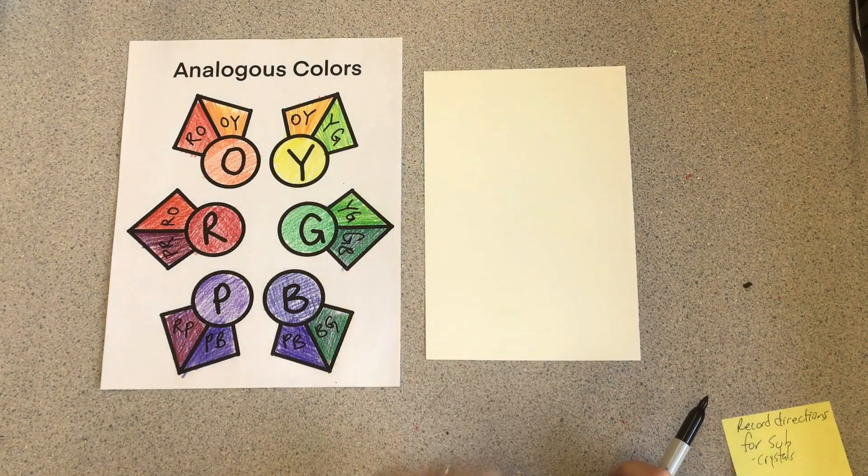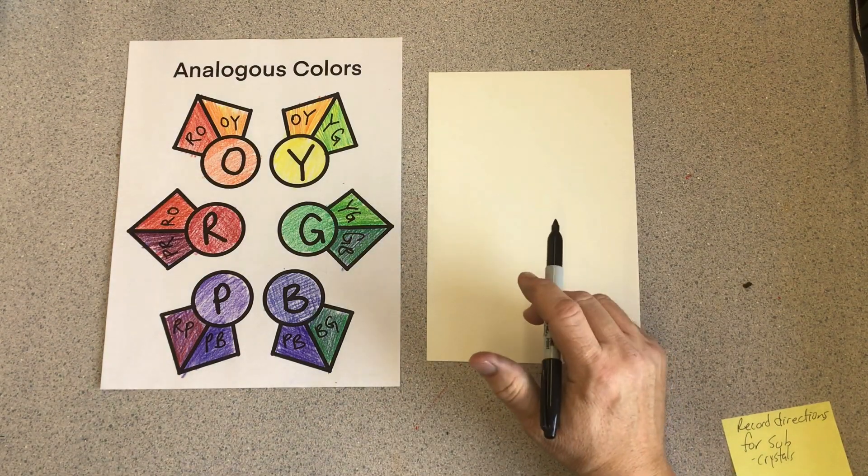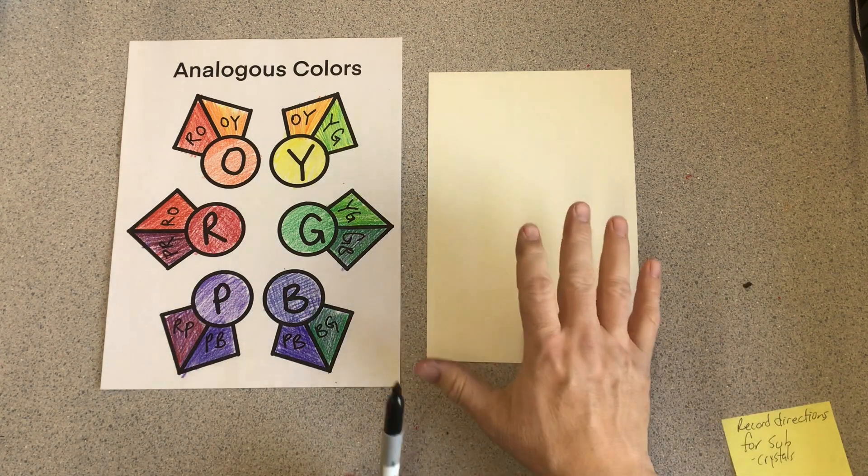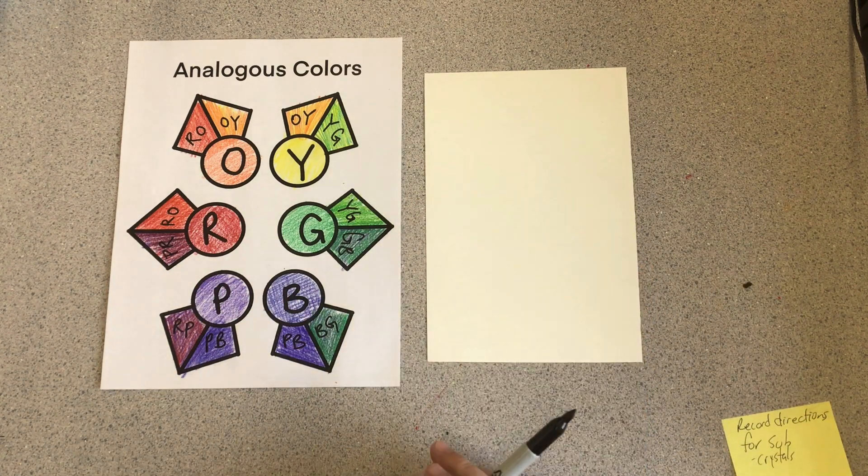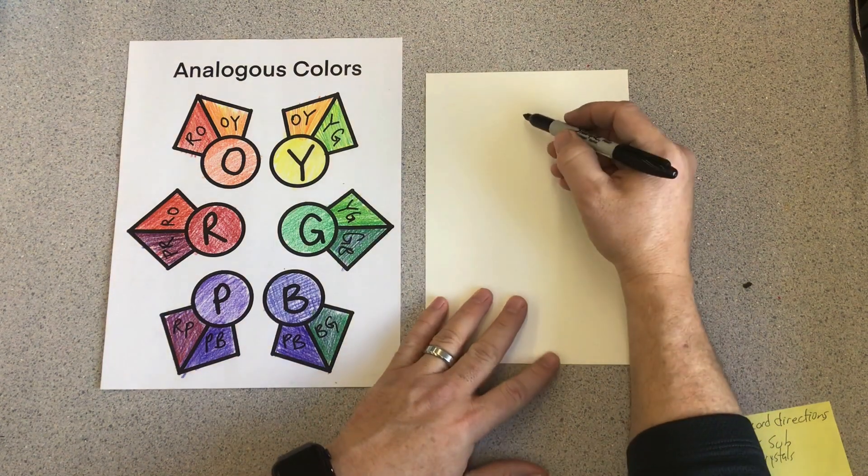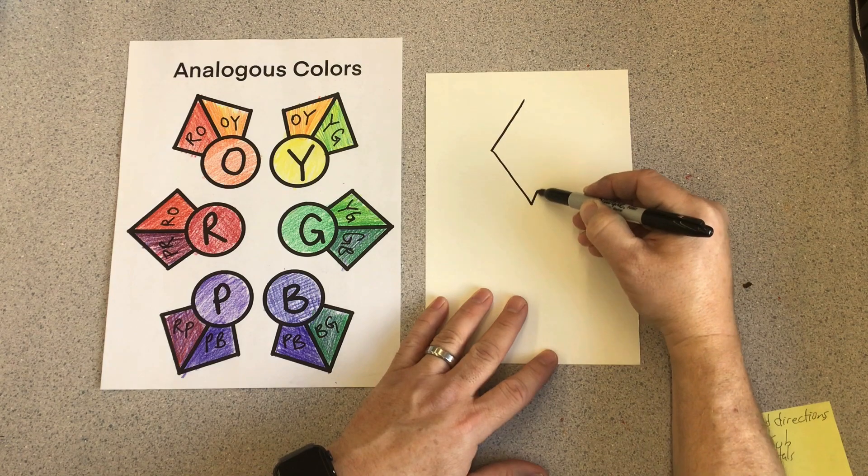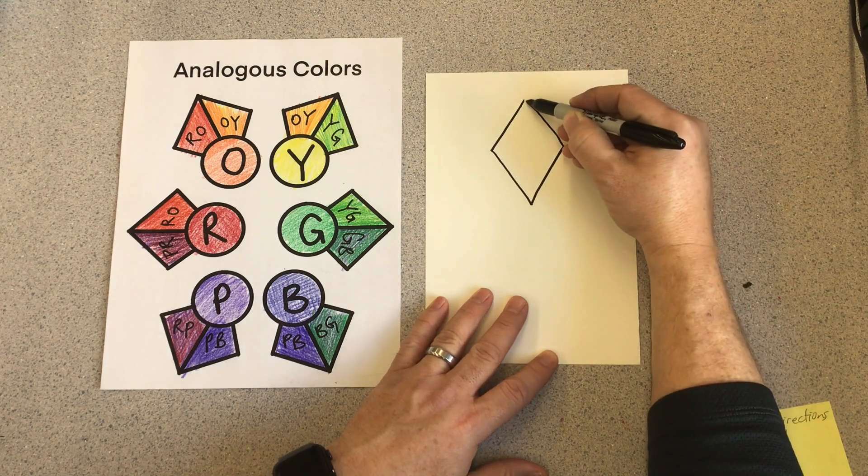And we're going to draw geodes, kind of the crystallization of forms that grow up from the ground. And we're going to start with three diamonds. So I'm going to draw just a normal diamond right in the middle. When we say the word diamond, just kind of the average diamond that we usually think about.